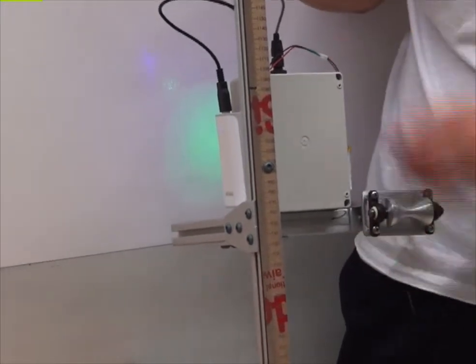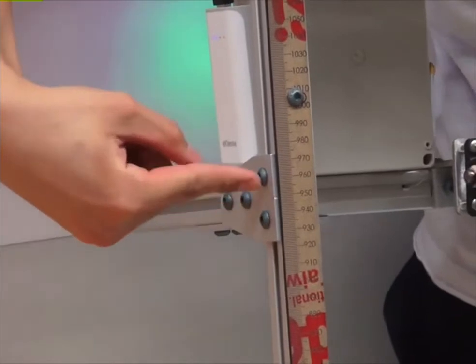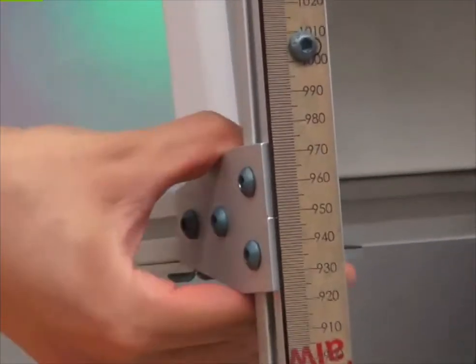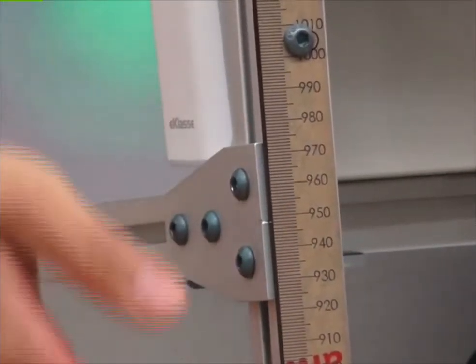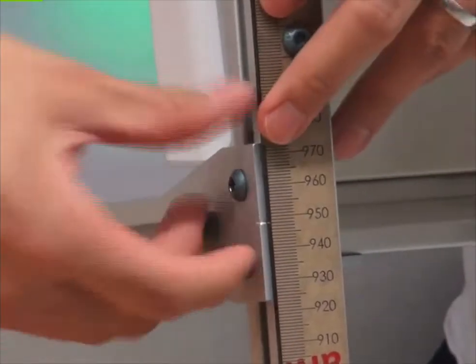To adjust the height you can use the L-wrench to loosen those two screws and then move up and down the device along this vertical arm until you find your position, and then fasten all the pieces.